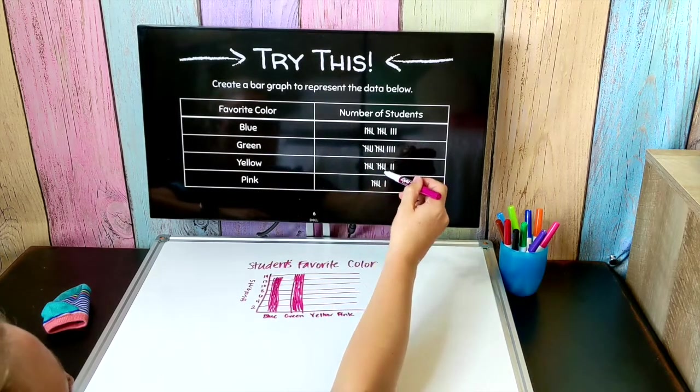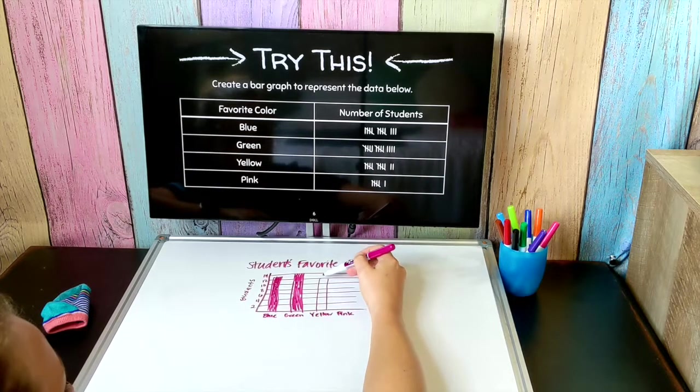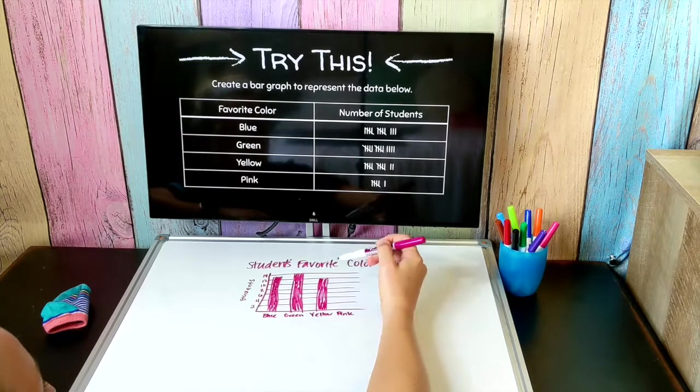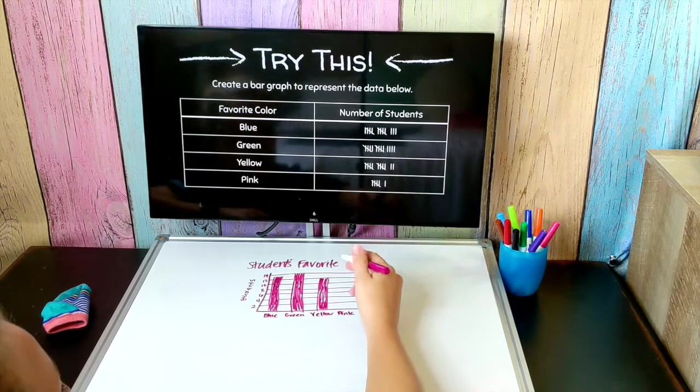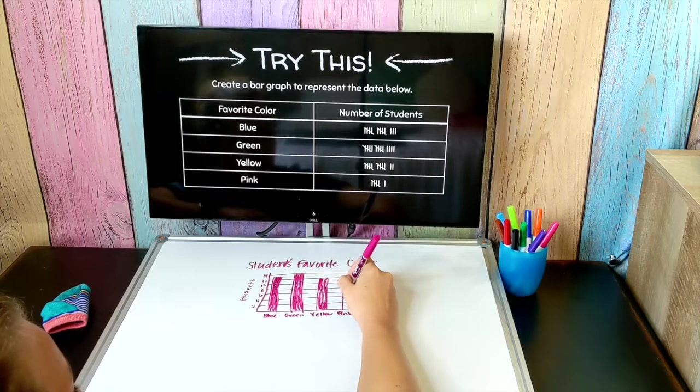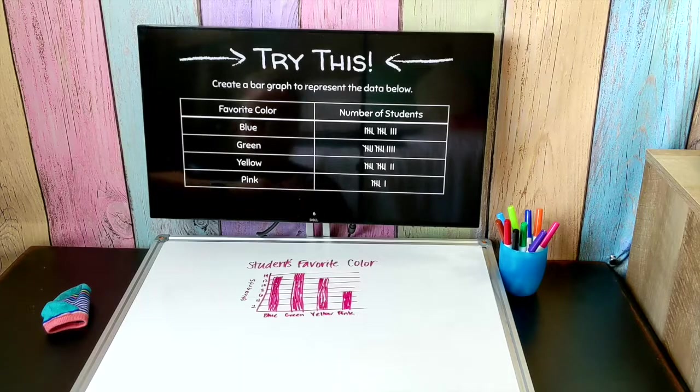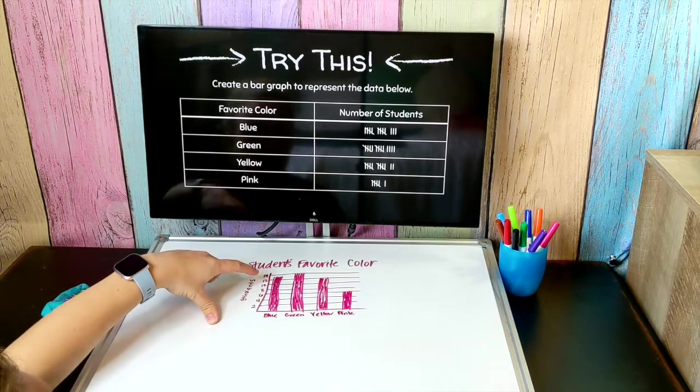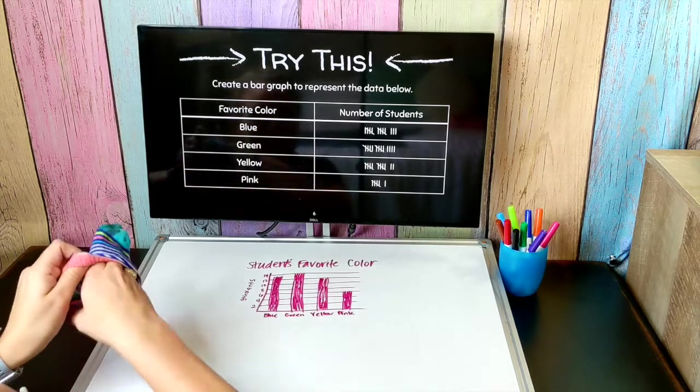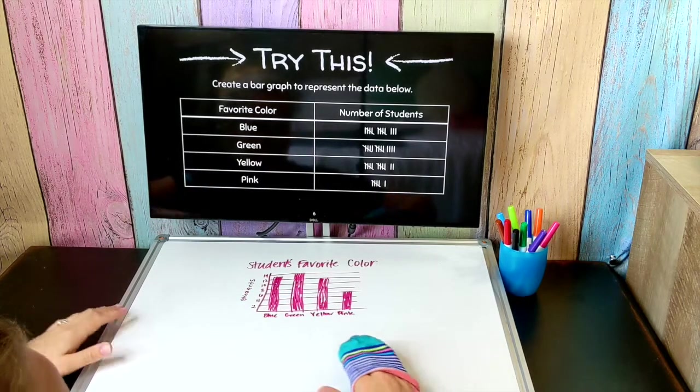Yellow had 5, 10, 12. And pink had the least with just 6. You may have made some different decisions on what scale you used or exactly what you titled it. That's okay as long as your graph makes sense and has everything someone would need to make sense of it, you're good.